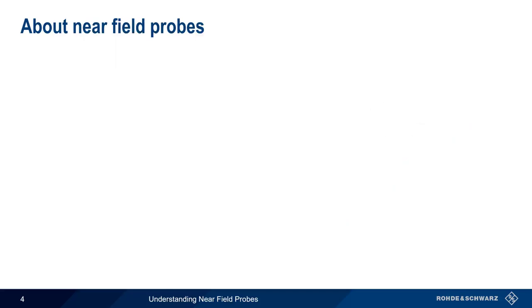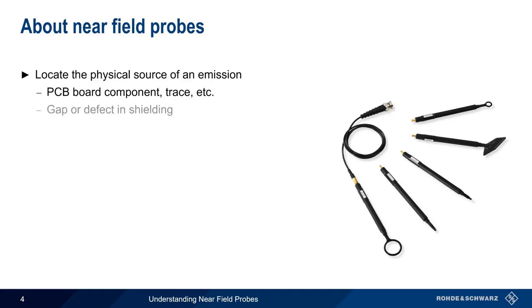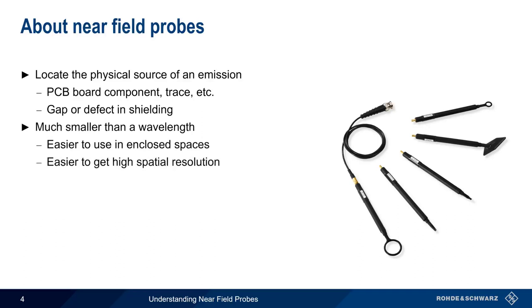As the name implies, near field probes, also sometimes called sniffer probes, are used to make measurements in the near field. This is almost always done when trying to locate the physical source of an emission, for example, a component, a trace on a printed circuit board, etc., or sometimes when trying to locate a gap or defect in shielding. Because near field probes are usually much smaller than a wavelength, it's relatively easy to use them in enclosed spaces, and easier to get higher spatial resolution, that is, high accuracy, with regards to the location of an emission.